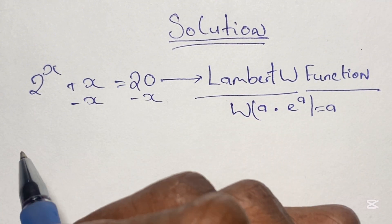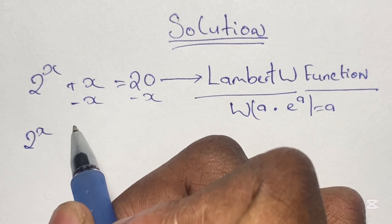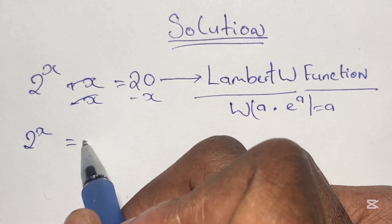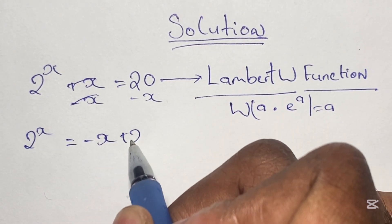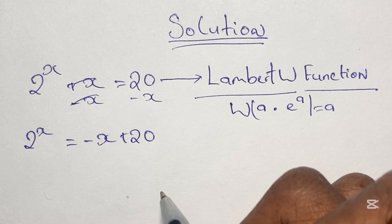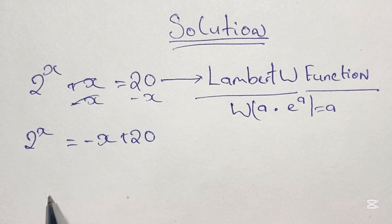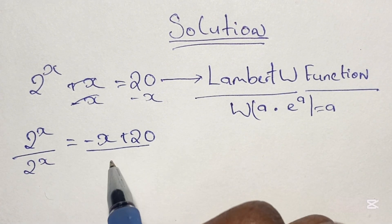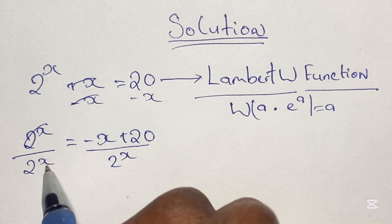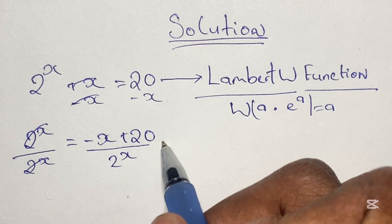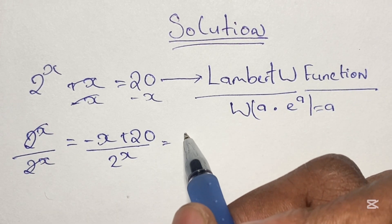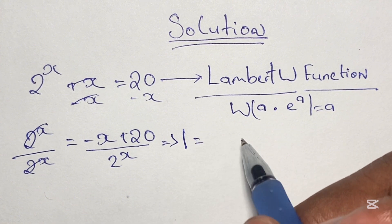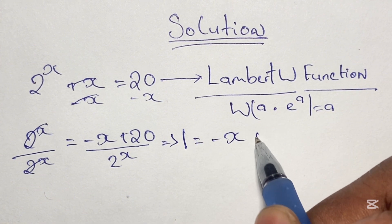So we start by subtracting x from both sides of this equation, and this gives us 2 to the power of x is equal to negative x plus 20. Then from here we can divide both sides of this equation by 2 to the power of x. We know that 2 to the power of x over 2 to the power of x is just going to give us 1, so we have 1 is equal to negative x plus 20 over 2 to the power of x.